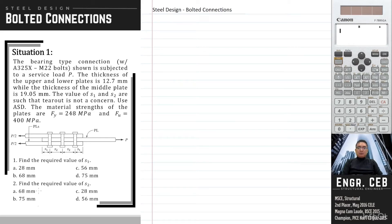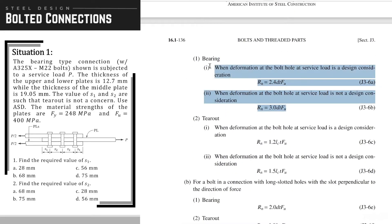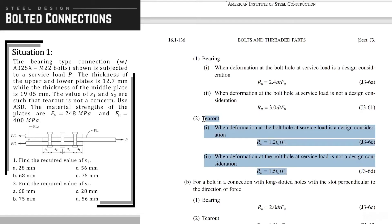Let us solve this problem about bolted connections. For bolted connections, bearing and tear-out strength at both poles are simultaneously checked. These are the formulas to be used for bearing, while these are the formulas to be used for tear-out.